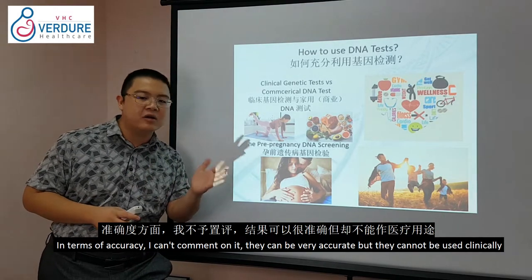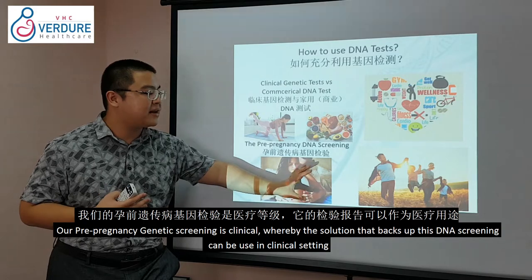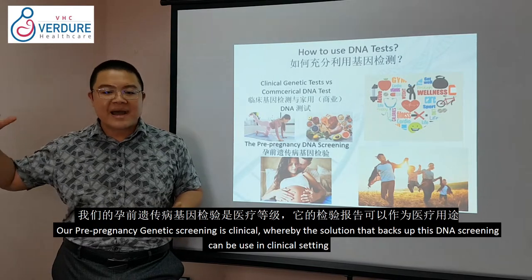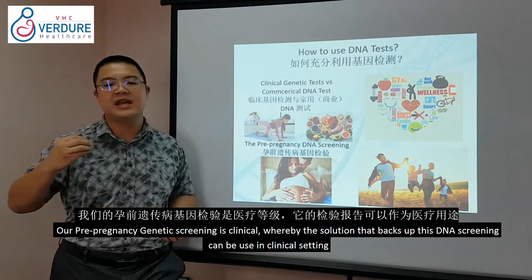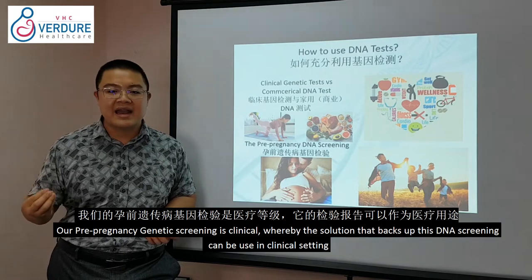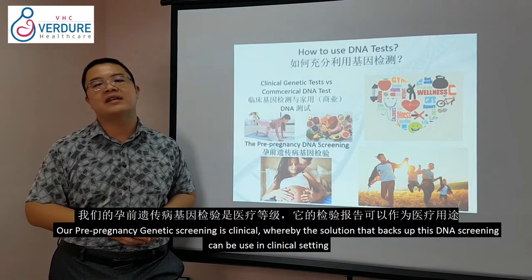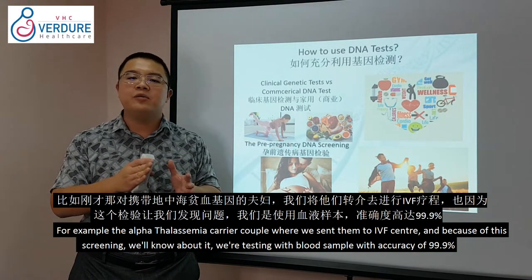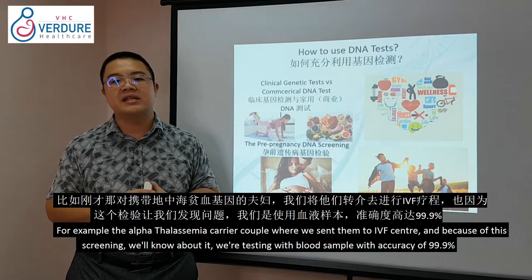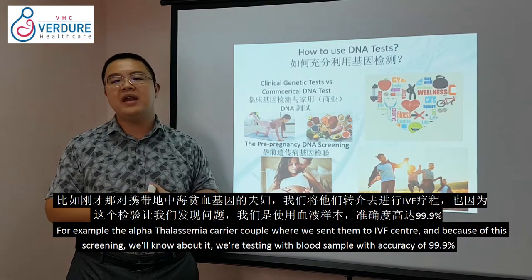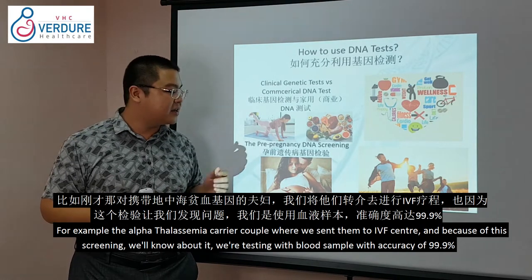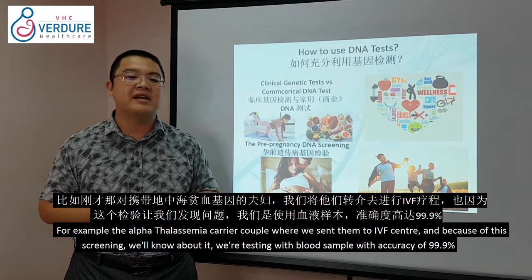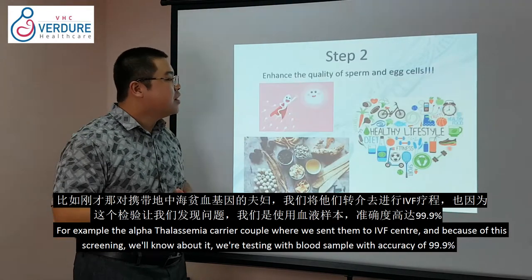What's the difference between clinical and non-clinical? Our pre-pregnancy DNA screening is a clinical genetic test, meaning the results can be used in clinical settings — for example, referring alpha-thalassemia-carrying couples to IVF centers. Because we are testing blood, the accuracy of the test is around 99.9%.